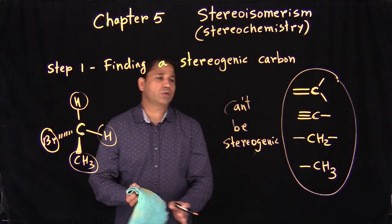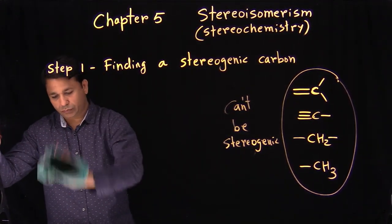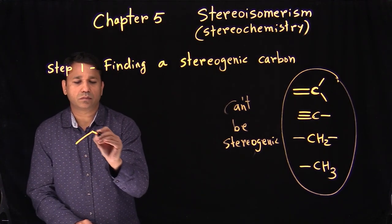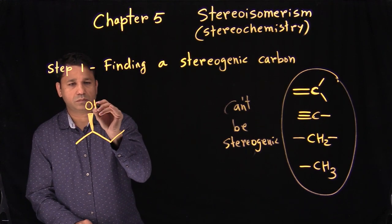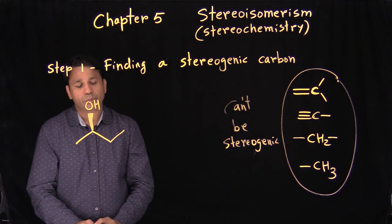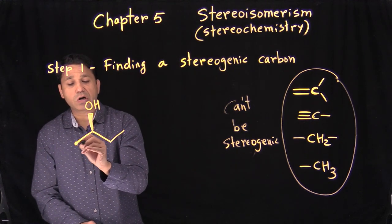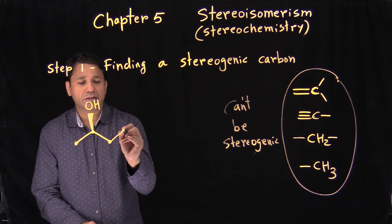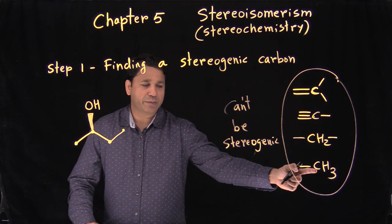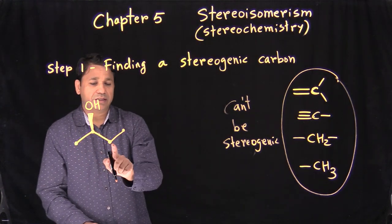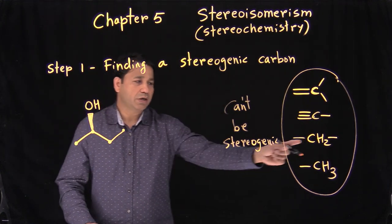Now let's apply this to real examples. When we have a chain molecule with four carbons: one is CH3 (ignore it), one is CH2 (ignore it), and one is another CH3 (ignore it). These all have identical hydrogens and cannot be stereogenic, so we focus only on the remaining carbon.